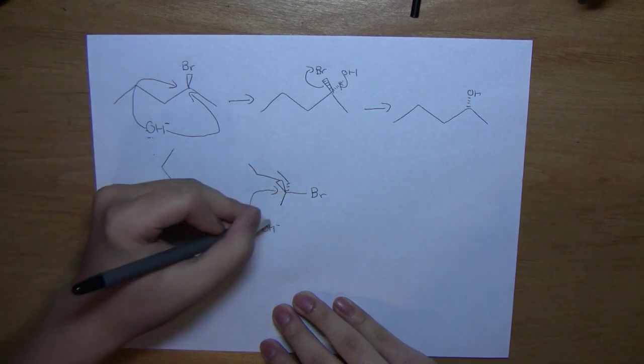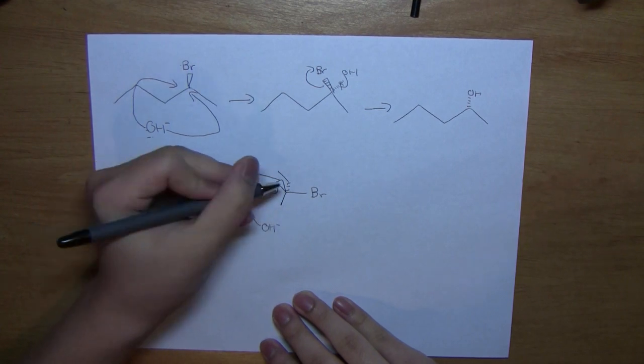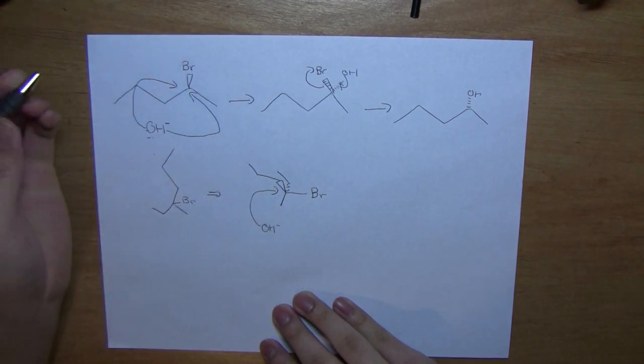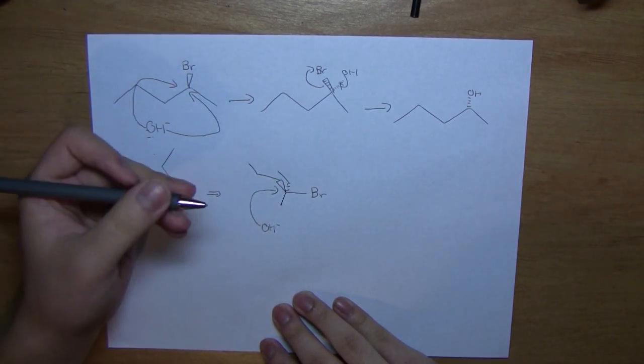Instead, more likely, this hydroxide would instead want to attack this carbon, or this carbon, or this carbon, this carbon, and so on. Therefore, it would not want to form this product.